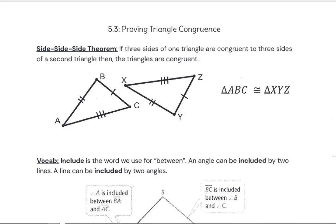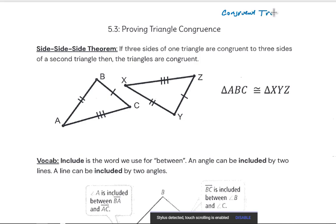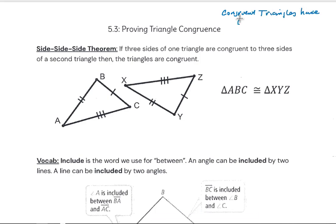These are our guided notes for 5-3, proving triangle congruence. We have the Side-Side-Side theorem: if three sides match between two triangles, we can say that those triangles must be congruent.